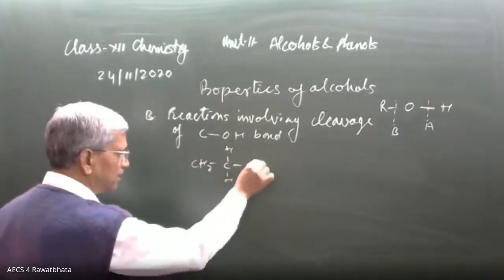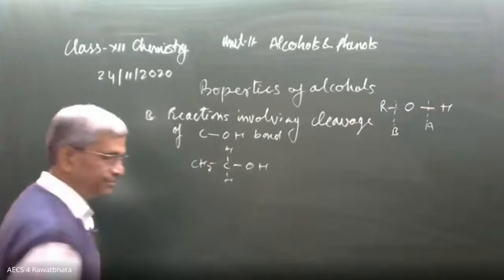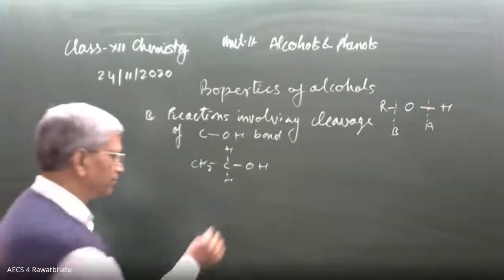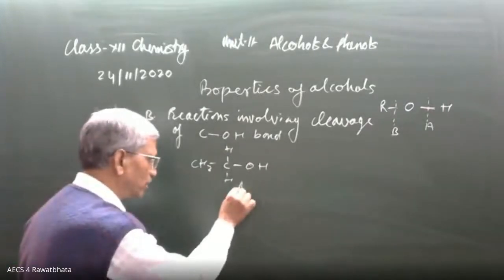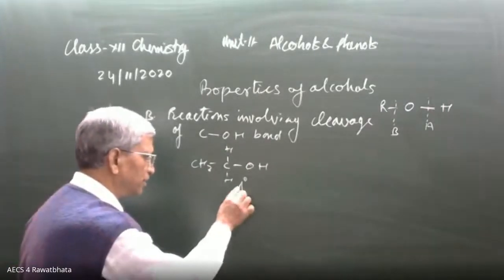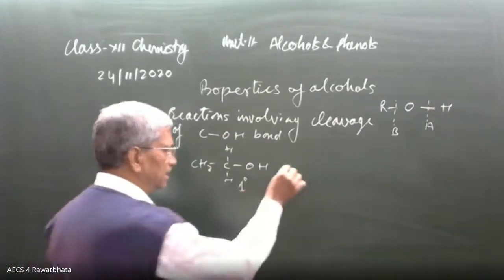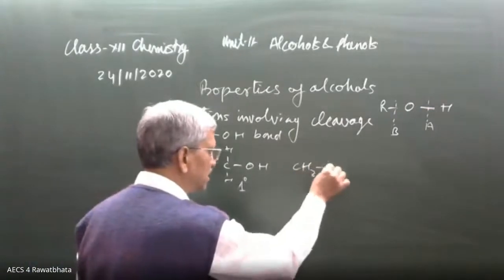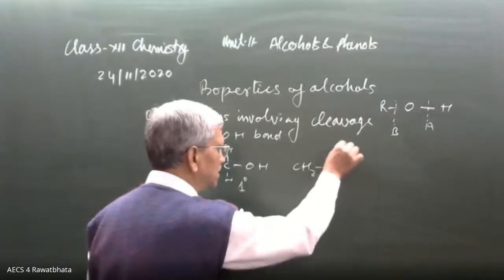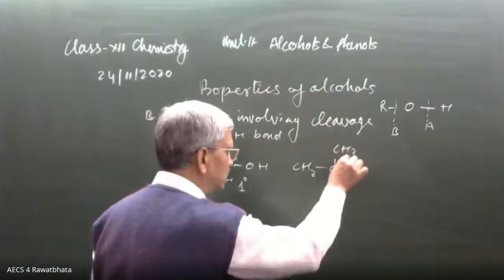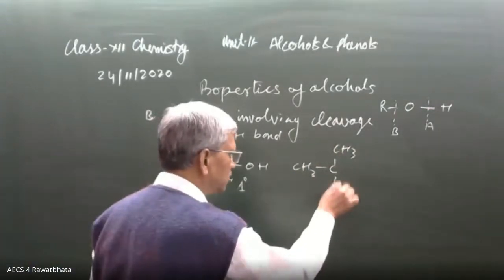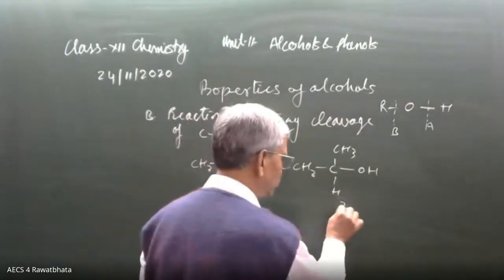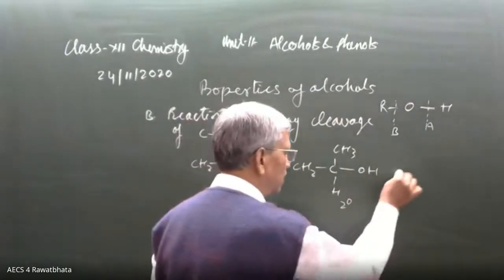CH₃CH₂H is a primary alcohol, also called 1° alcohol. The second one is CH₃CH(OH)CH₃ where the central carbon bears the OH group, and this is a 2° alcohol.